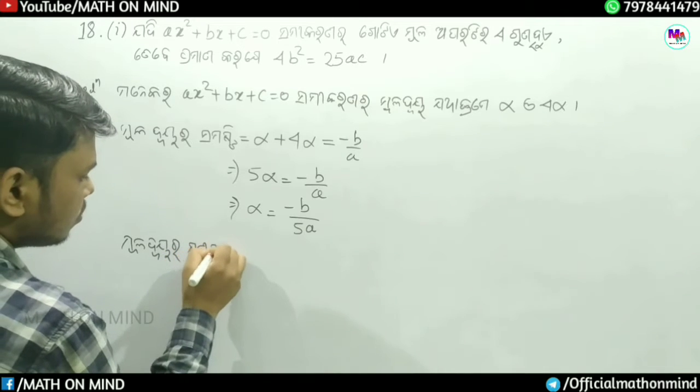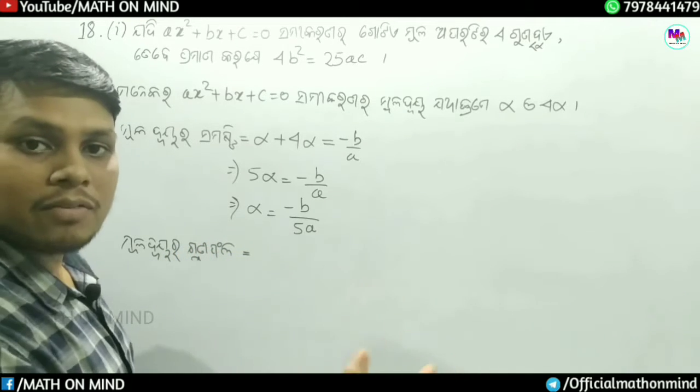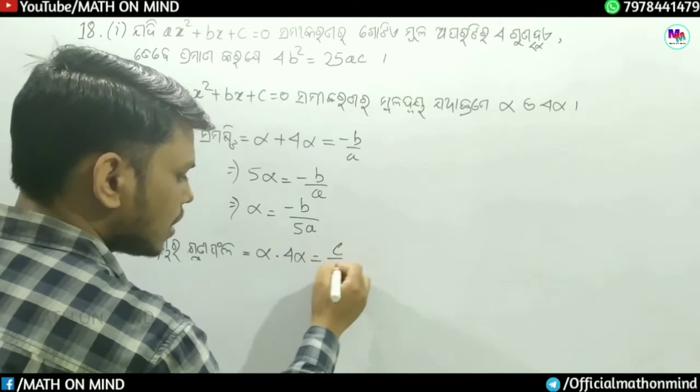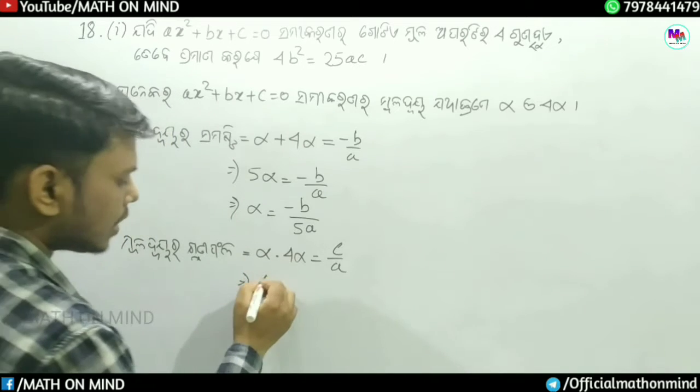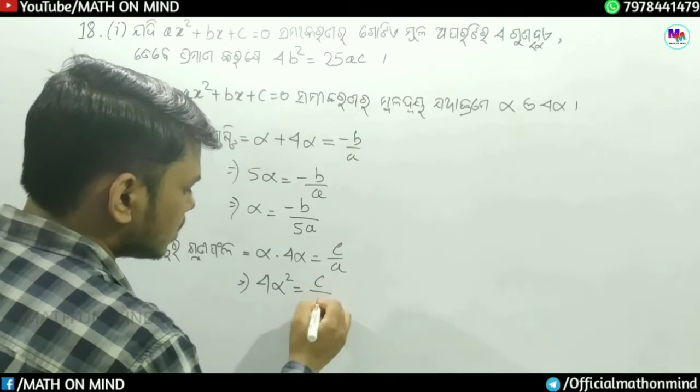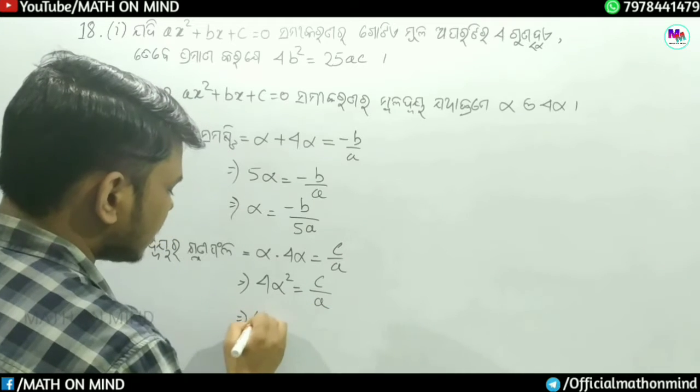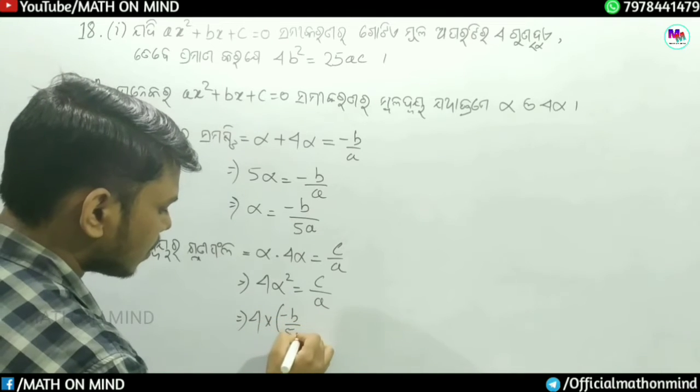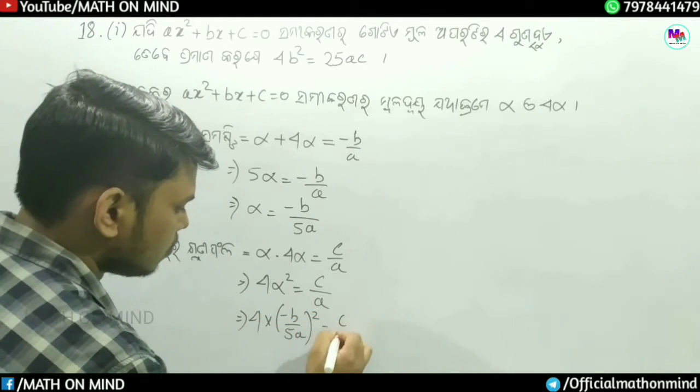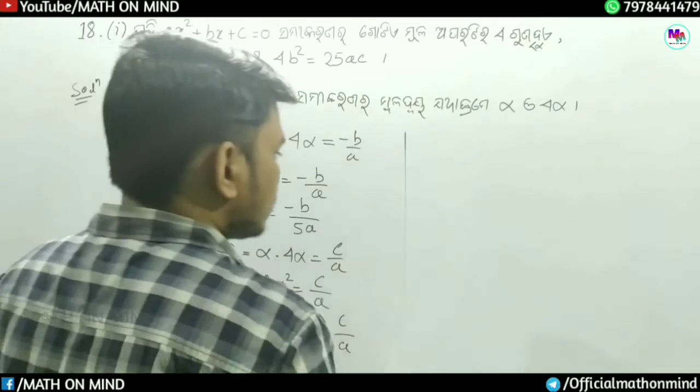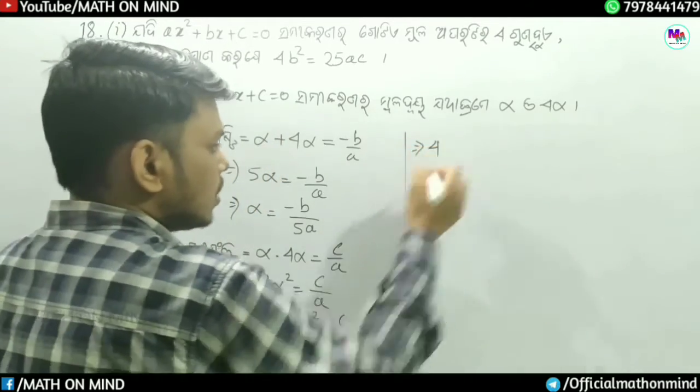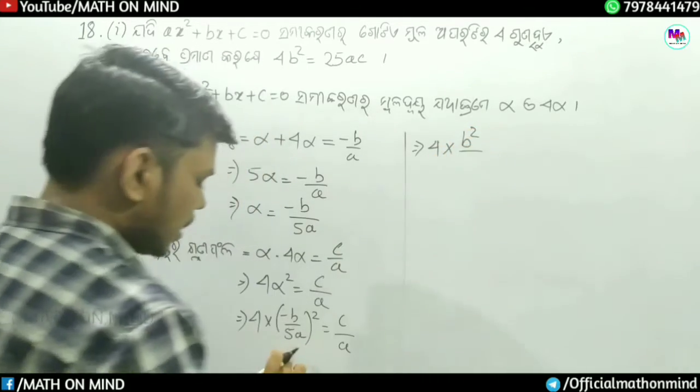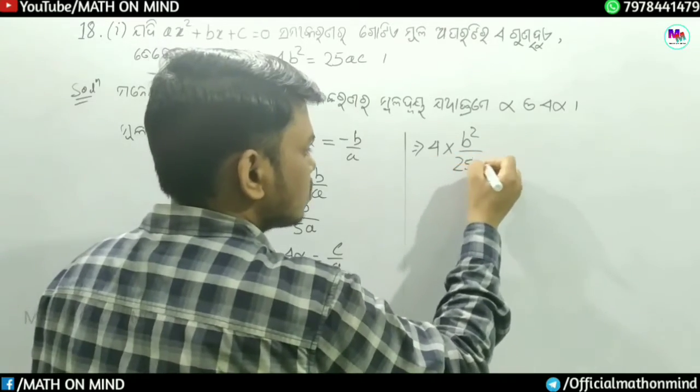Now, alpha into 4 alpha is equal to c by a. So 4 alpha square is equal to c by a.